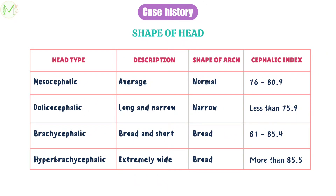If the value of cephalic index is between 76 and 80.9, the head type is mesocephalic — the person has average head shape and normal shape of arch. If the value is less than 75.9, the head type is dolicocephalic, with a long and narrow shape of head and narrow dental arch. If the value is between 81 to 85.4, the shape is brachycephalic — broad and short head with broad dental arches. If the value is more than 85.5, the patient is hyperbrachycephalic with an extremely wide head and broad dental arch.